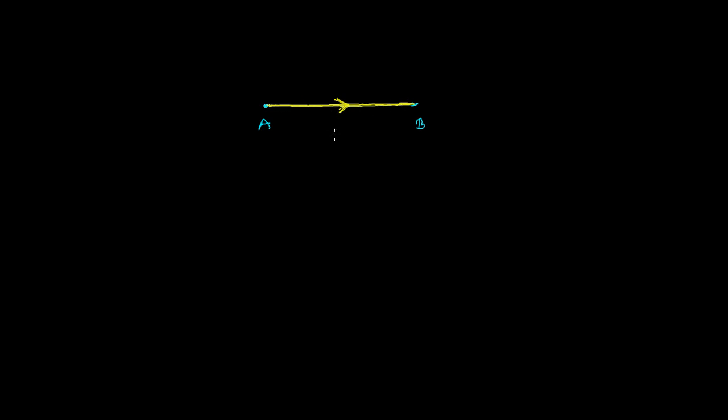Let's say here is point A and here is point B. If A is my starting point — the initial point — and B is my terminating point, then I draw a line from point A to B and give the direction from where I move. I move from A to B; let's say this is 5 meters.